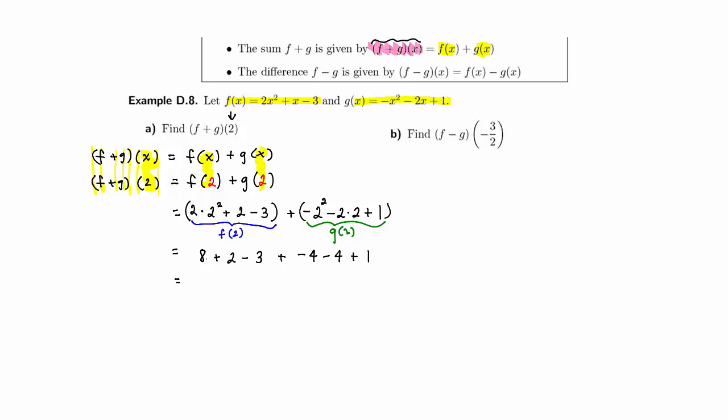And then we get 10 minus 3 is 7, minus 4 minus 4 is minus 8, plus 1 is minus 7, so plus a negative 7. So 7 plus a negative 7 would be 0. So f plus g of 2 is equal to 0.